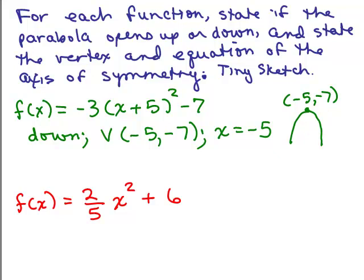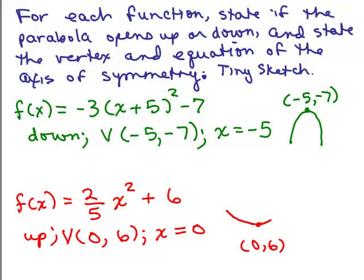All right. Next one. Up or down? Well, 2/5 is positive, so it goes up. What's the vertex? Notice I didn't write x - h. Well, that means that the y value is just 0, because you could think of that as x - 0. (0, 6) is the vertex, and the axis of symmetry then is just the y-axis, x = 0. So this one, wherever the vertex, if that's (0, 6), it's going to go up. 2/5 means it's going to be wide. I didn't ask about that, but, you know, it should be a more wide parabola.